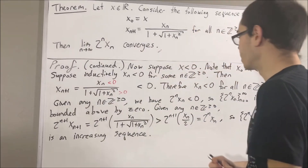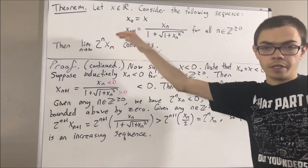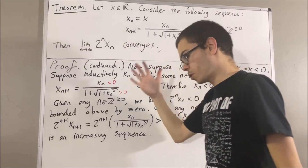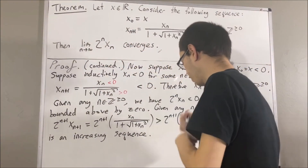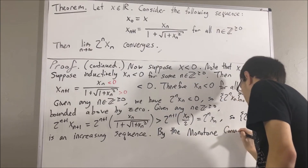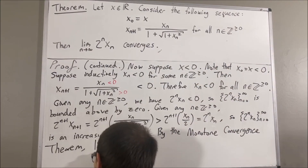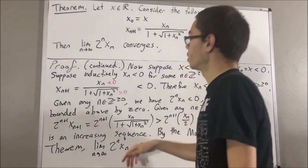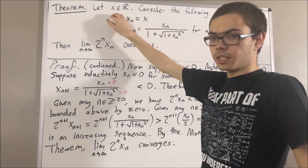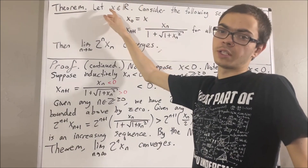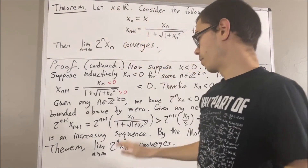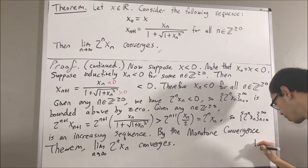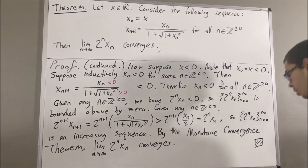Because this is an increasing sequence that is bounded above, by the monotone convergence theorem, the sequence must converge. At this point, we have shown in all three cases — x equals 0, x greater than 0, and x less than 0 — that this sequence converges. This completes the proof.